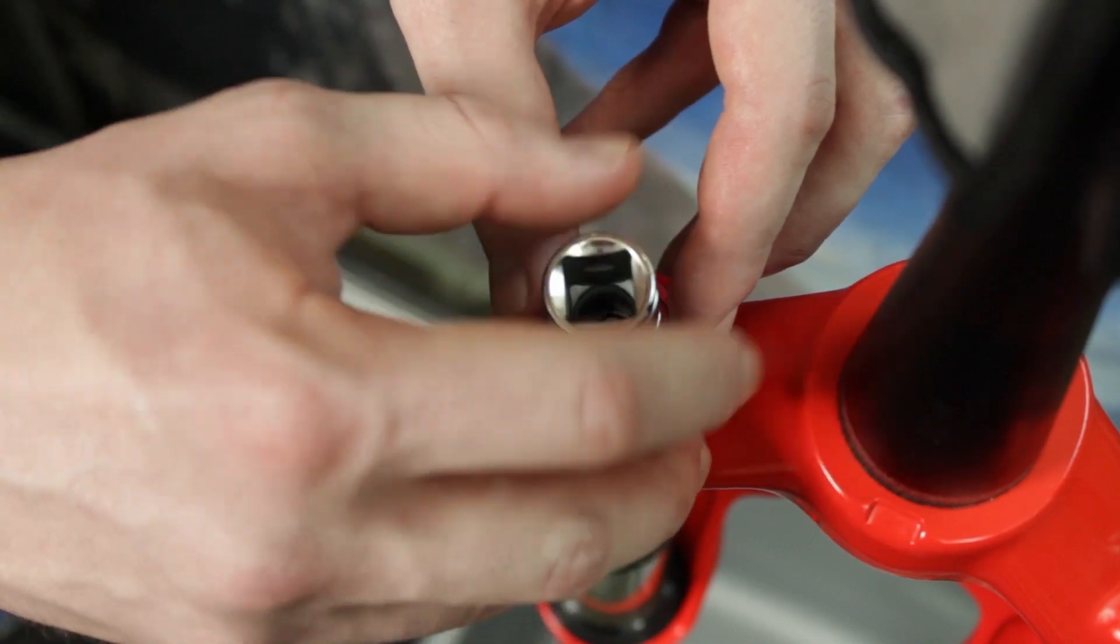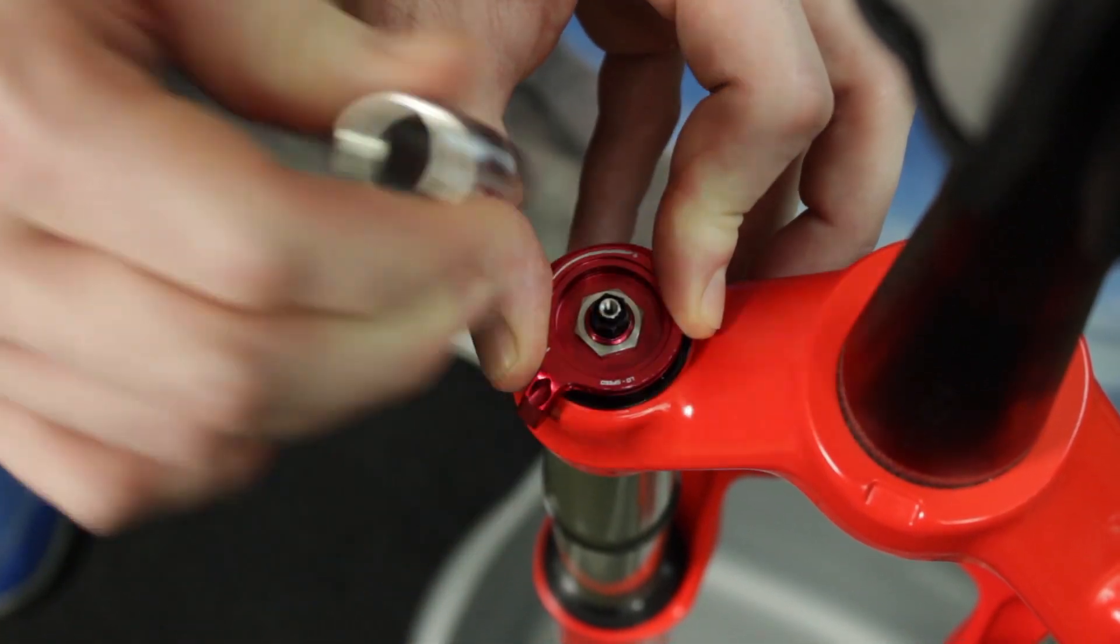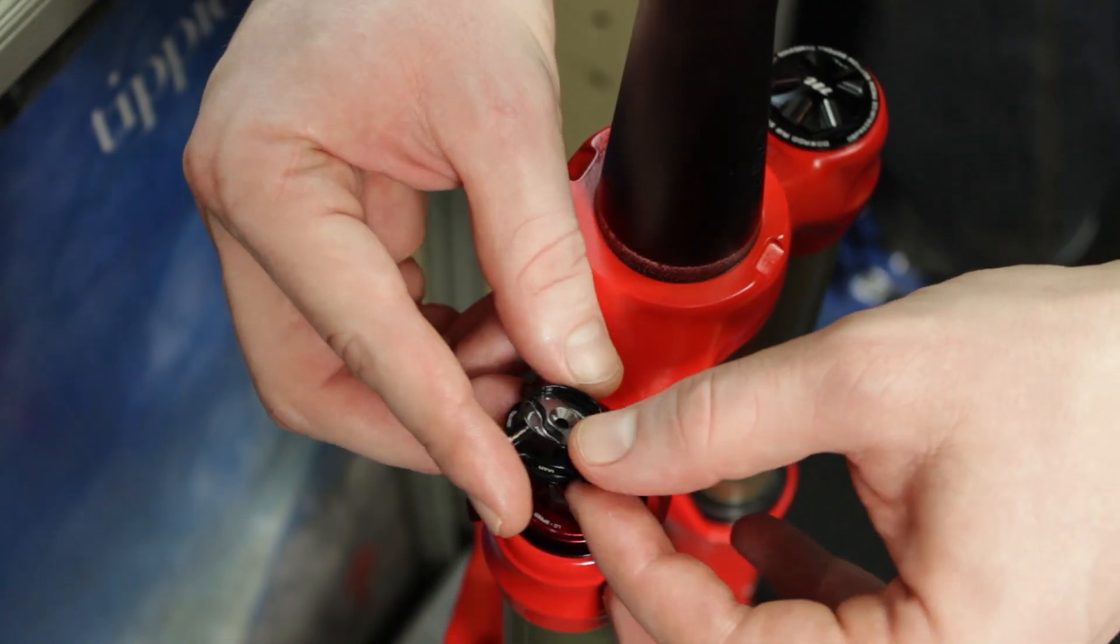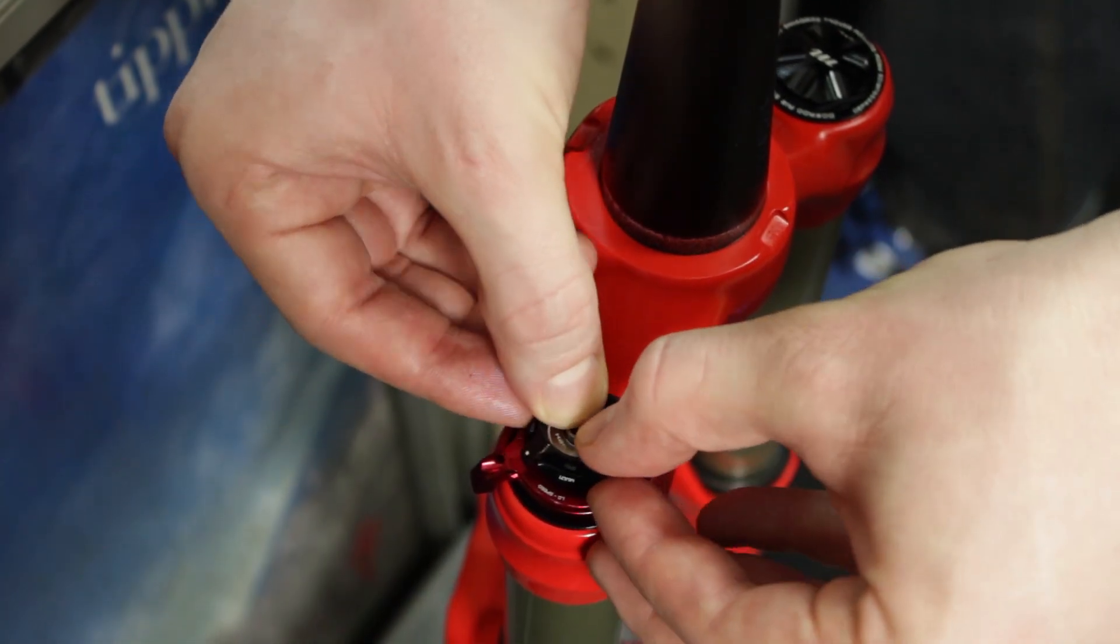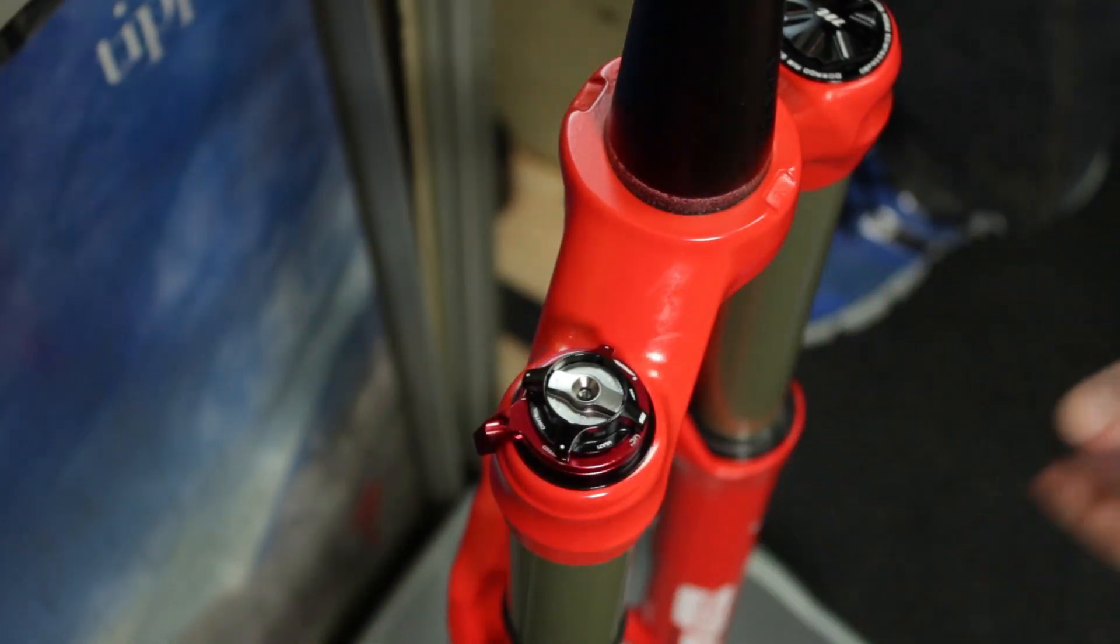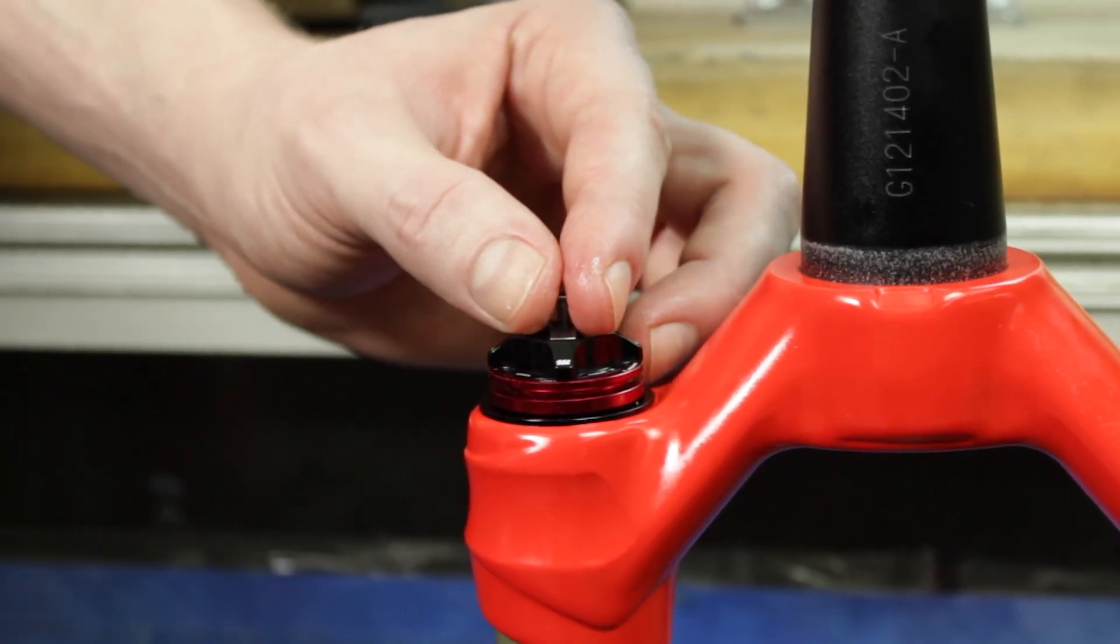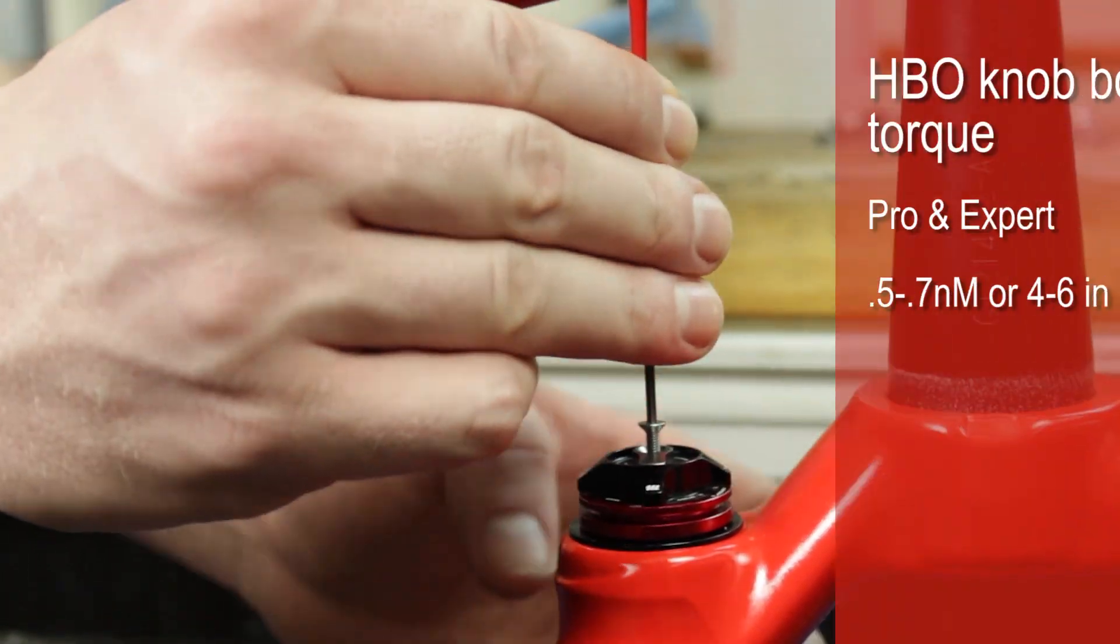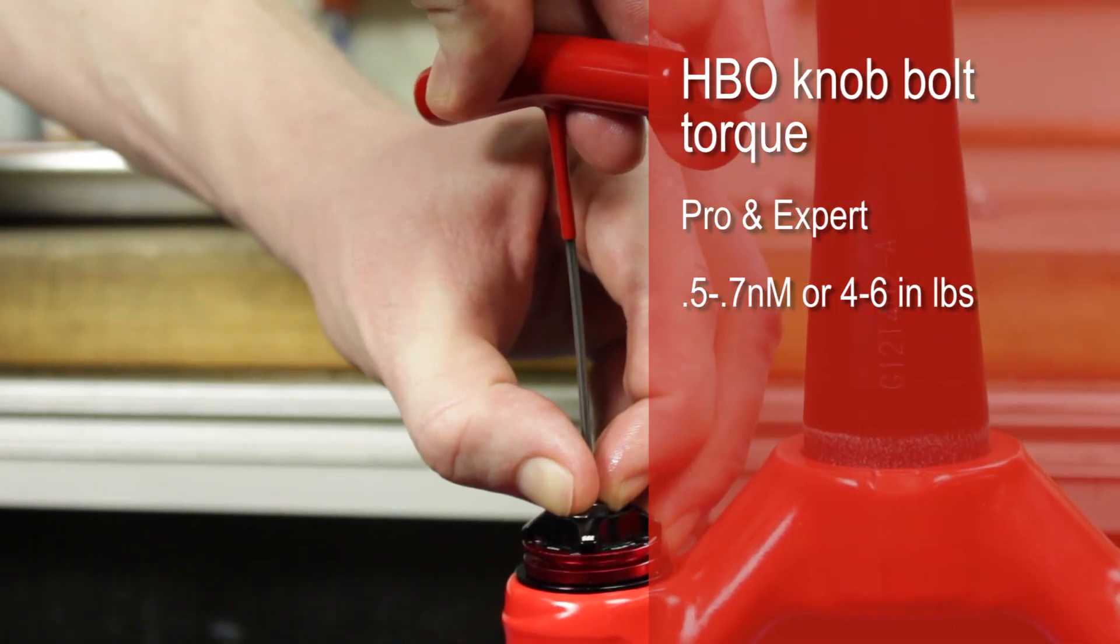Place the high speed HBO knob combo on the top of the low speed knob and snap it into place. Be sure to secure the HBO adjuster down with your thumb while installing it. Insert the knob bolt and tighten to a torque of 0.5 to 0.7 newton meters or 4 to 6 inch pounds.